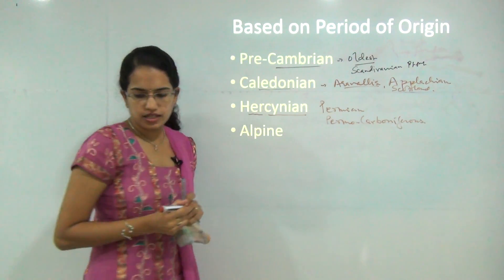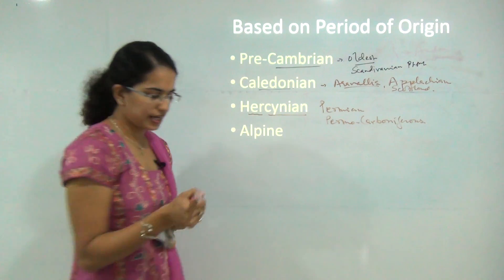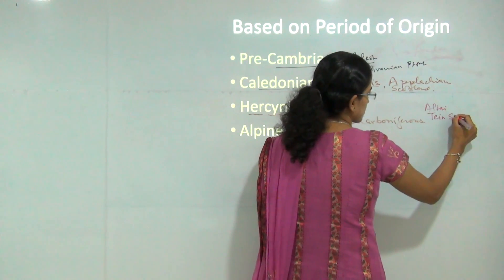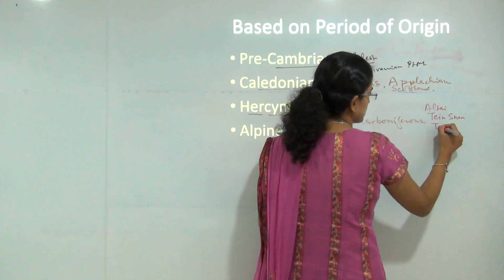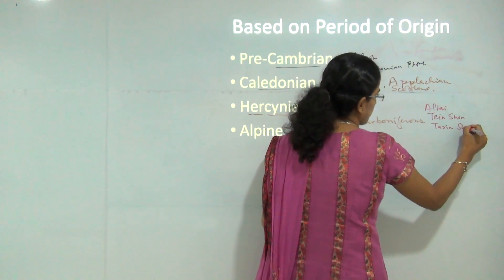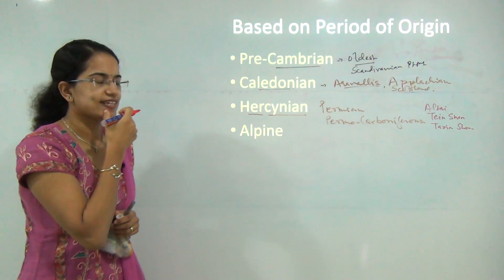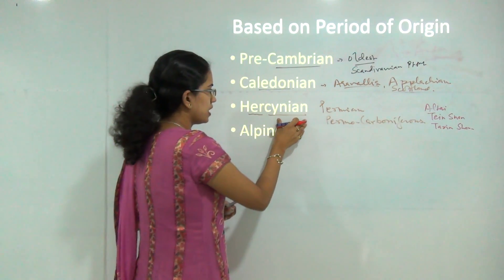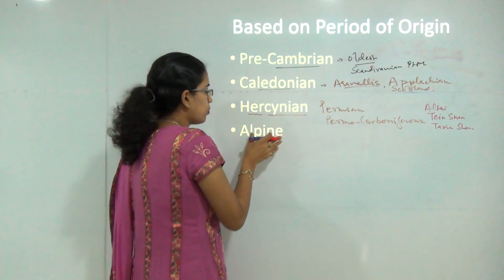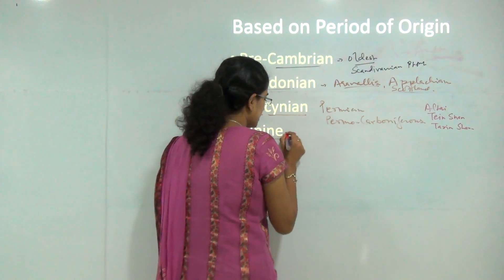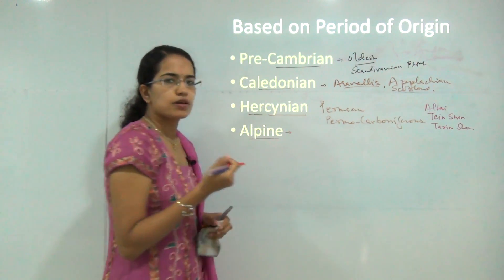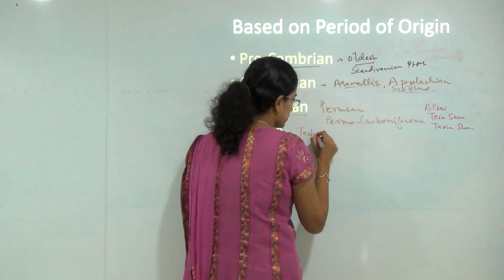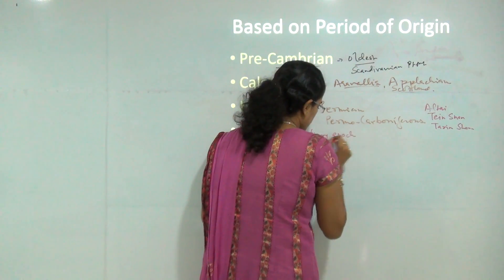The Hercynian period includes mountain range systems like the Altai and the Tarim Basin. Regions from central Europe and central Asia would be covered under the Hercynian period. The Alpine period is considered the most recent period, falling in the Tertiary epoch.